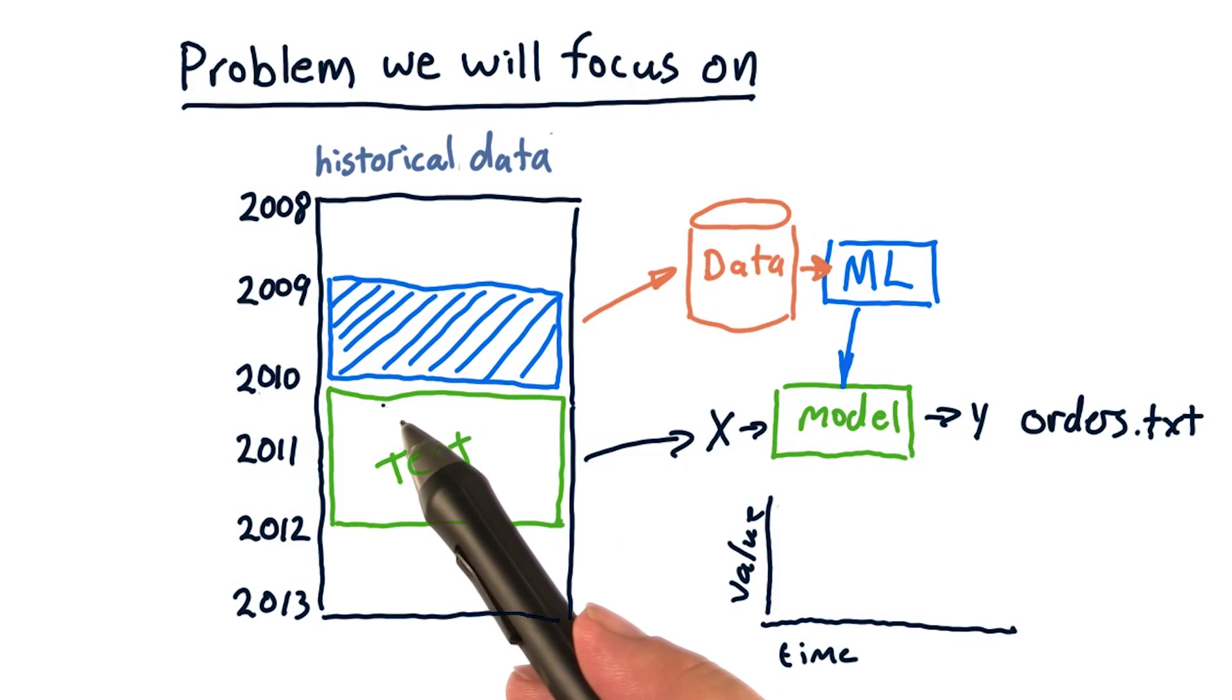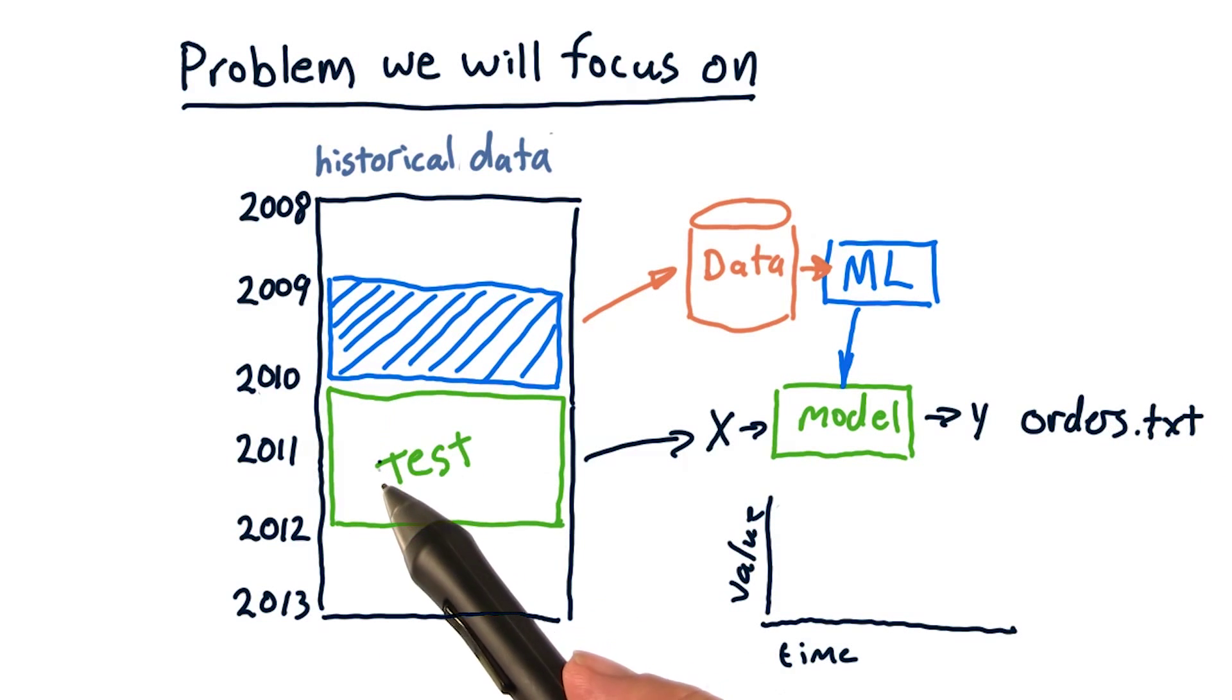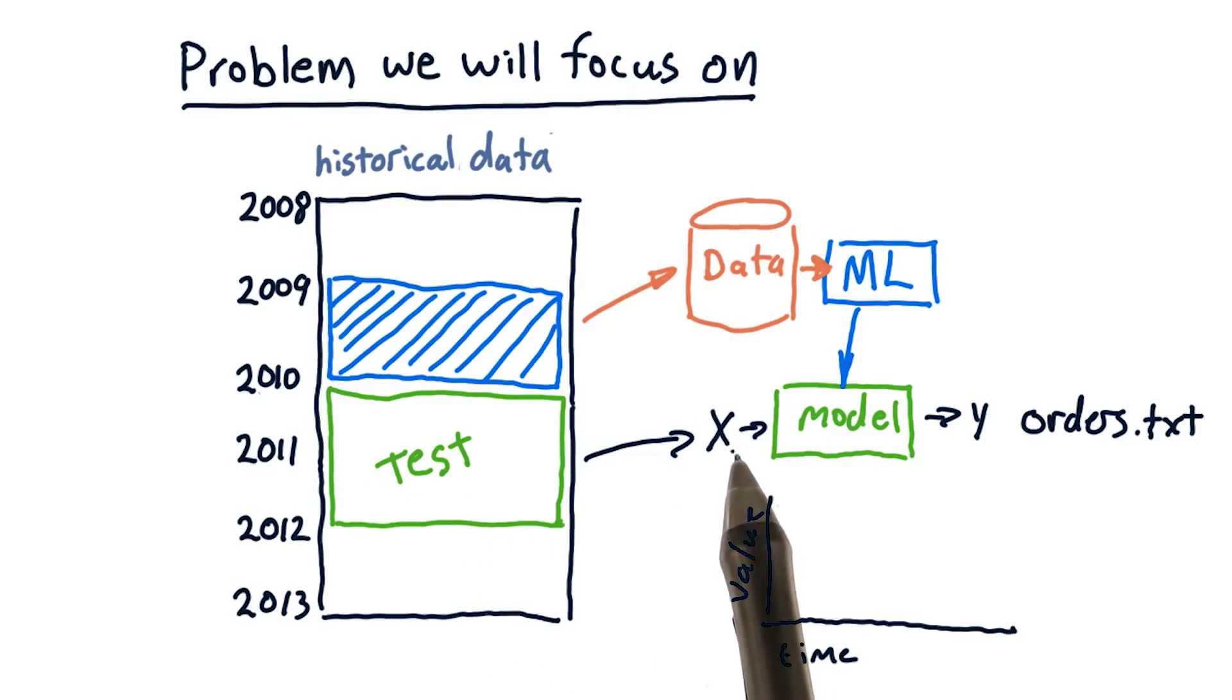Then we'll test over the years 2010 and 2011. So those testing values will become our X, which will push through the model to create a Y or a forecast.